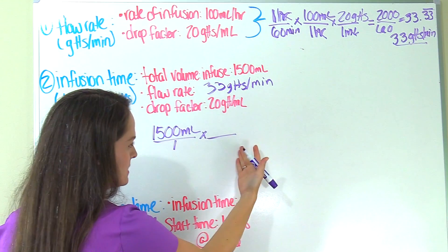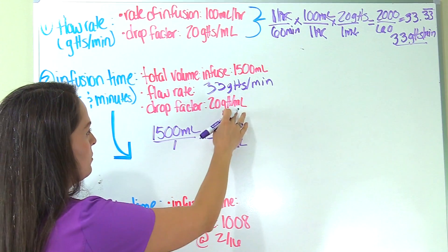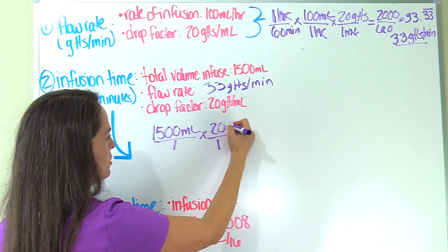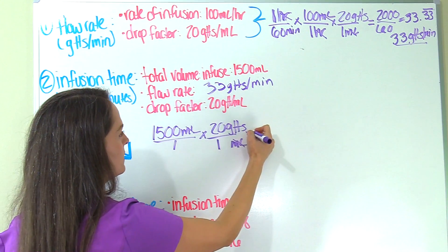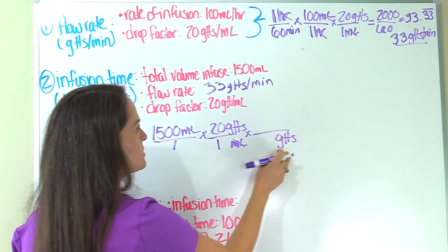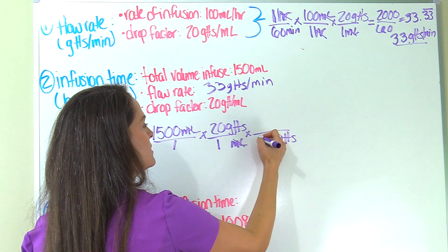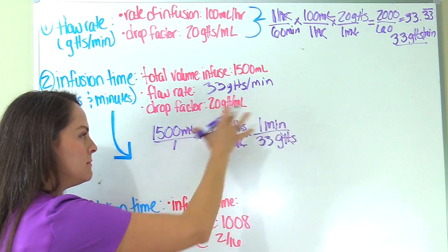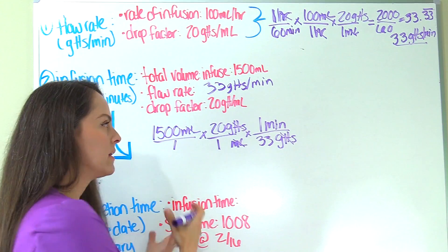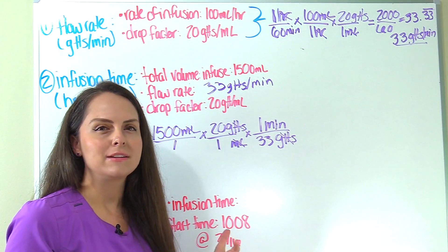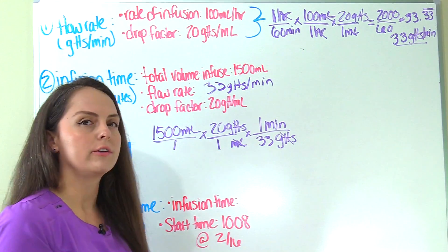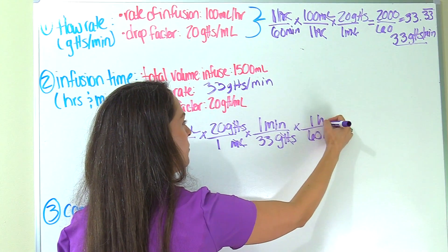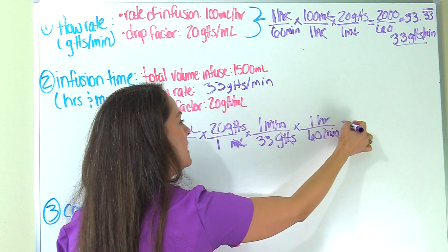Since we're doing dimensional analysis, we need matching units so everything can cancel out. We plug in our drop factor: for every mL the patient is getting, they get 20 drops — that cancels out milliliters. Then we put in our flow rate: the patient is going to get 33 drops every minute — that cancels out drops. Now we're in minutes, but I need hours and minutes. If we calculate it out now we'll get a really big number, so we'll do a little converting. We know there are 60 minutes in one hour, so minutes cancels out and we're ready to solve.